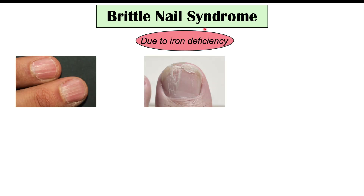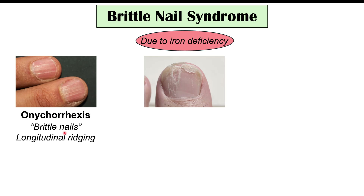Another potential nail finding is brittle nail syndrome, which is also due to iron deficiency. In brittle nail syndrome we can get particular nail findings. One of those is what we call onychorrhexis, which refers to longitudinal ridging — lines that occur on the nails. This can occur in brittle nail syndrome.